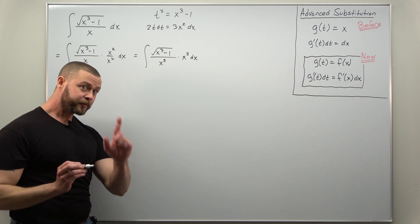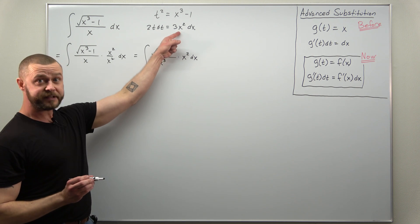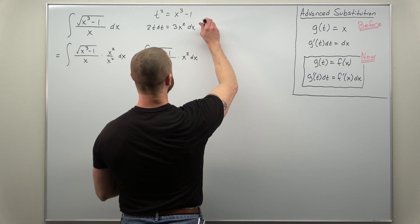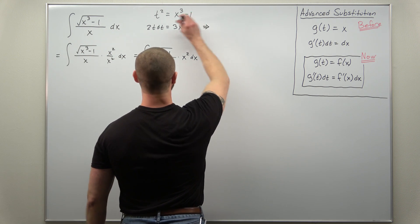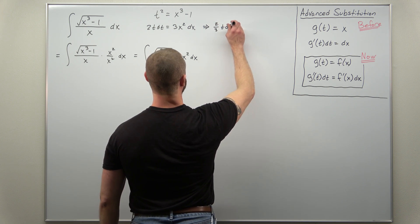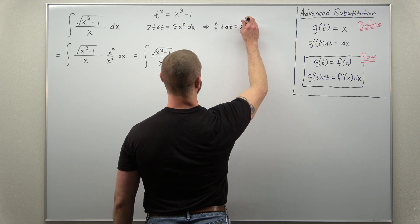All right now we have for the most part x squared dx but the factor of 3 seems to be missing here so let's divide that over. So we'll write this differential statement as two-thirds t dt equals x squared dx.